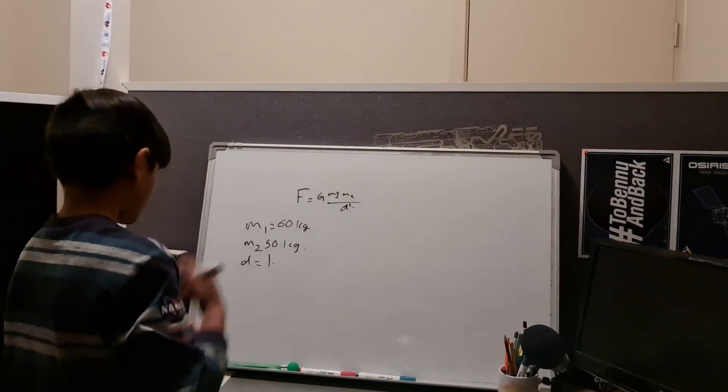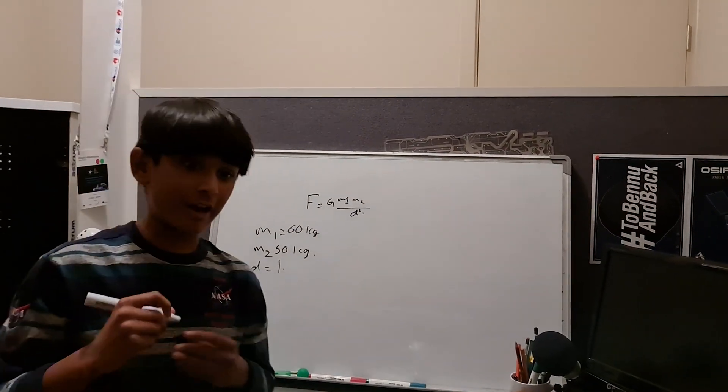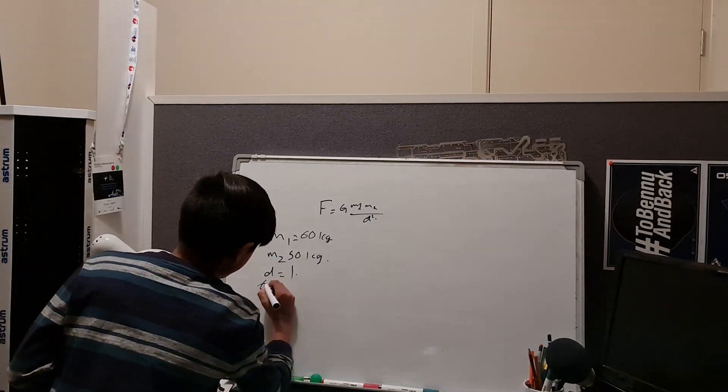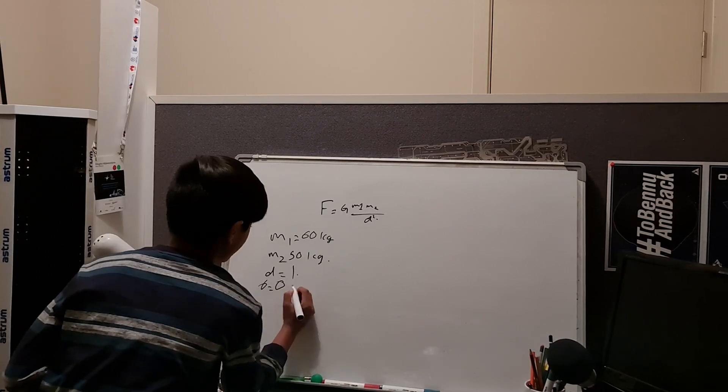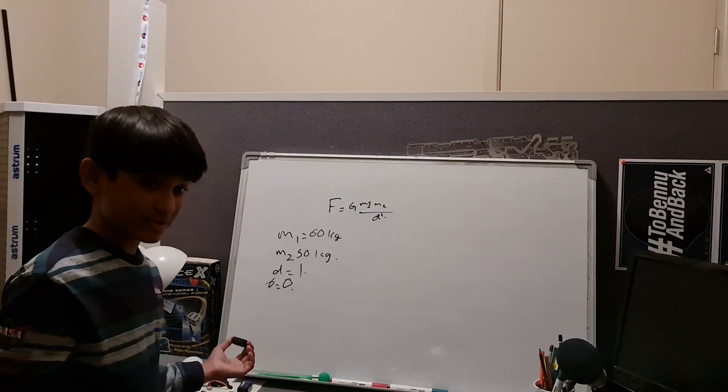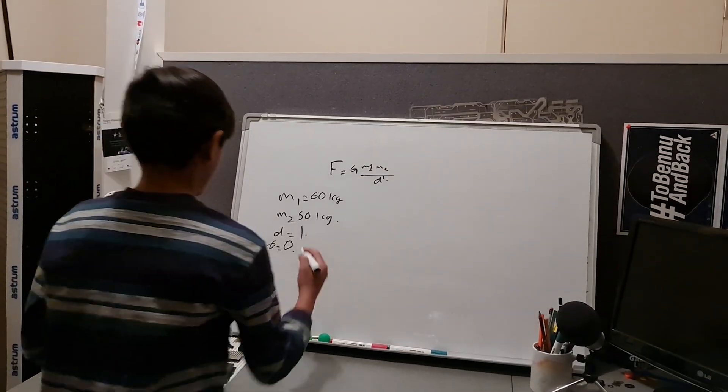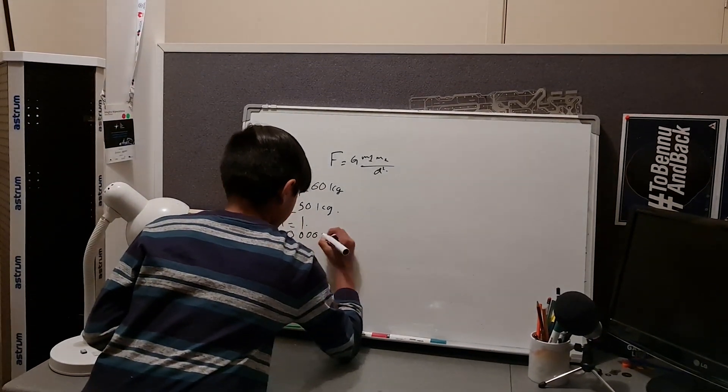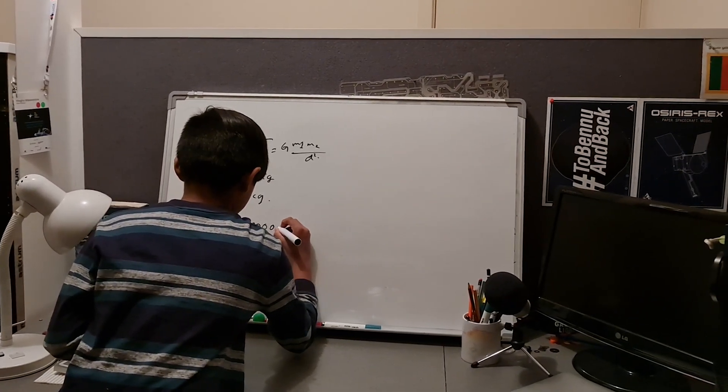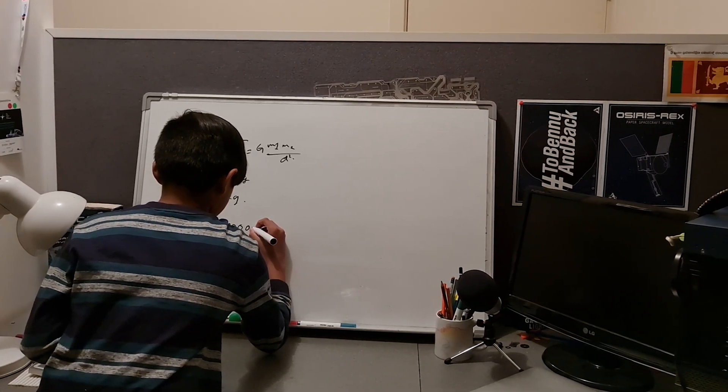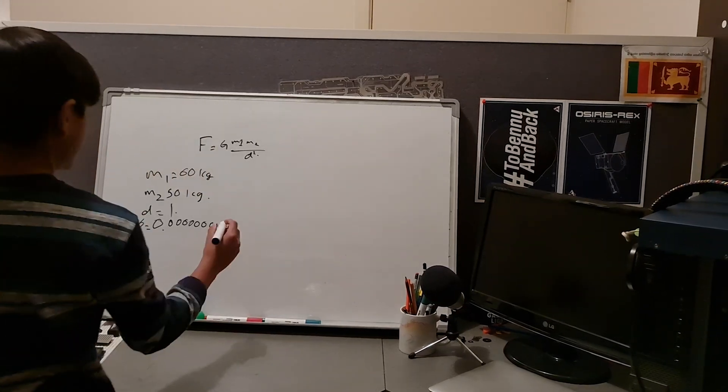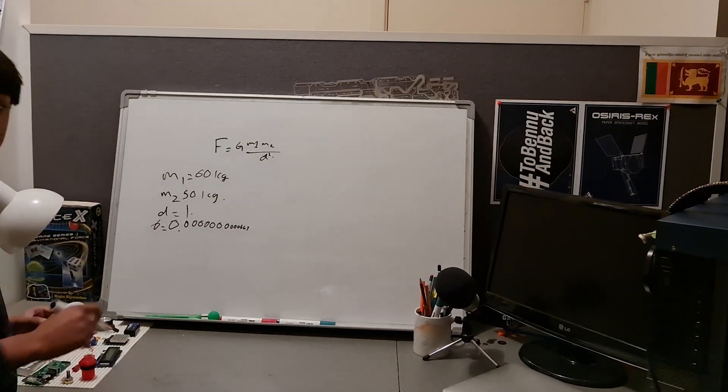And G, obviously. So G is the gravitational constant. An easy way to remember what G is, is it's just G equals zero point, and after the decimal point there's ten zeros. That's an easy way to remember how many digits there are. There's literally ten zeros. So this is the gravitational constant.